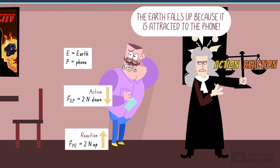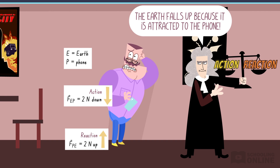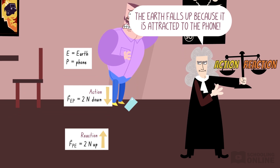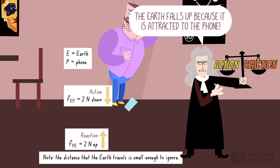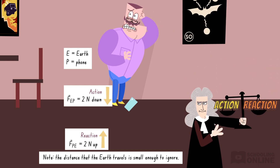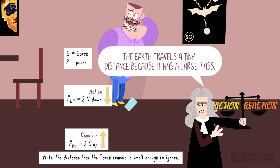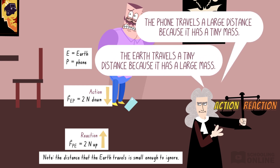Now, it is technically correct to say that the Earth falls up towards the phone. But in reality, the Earth moves an incredibly small distance — smaller than the width of an atom — so we never actually see the Earth moving. The apparent differences in the motion of the Earth and phone are caused by the enormous differences in their masses, but we'll cover this in another video.